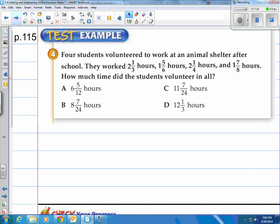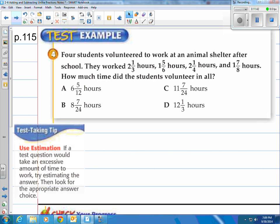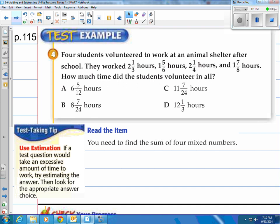Check this one out. This is just a test example. It says four students volunteered to work at an animal shelter after school. They worked two and one-third hours, one and five-sixth hours, two and one-fourth hours, and one and seven-eighth hours. How much time do the students volunteer in all? Here's a test tip for you: use estimation on some of these problems. It says if a test question would take an excessive amount of time to work, try estimating the answer, then look for the appropriate answer choice. So take a look at this. What are we really looking for? We need to add all these numbers up to figure out how many hours they totally work, right? So they call it the sum, you have to add them up.